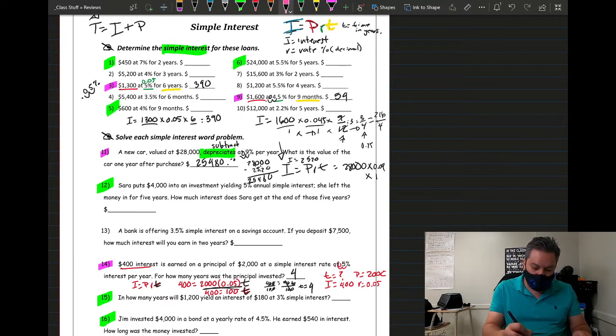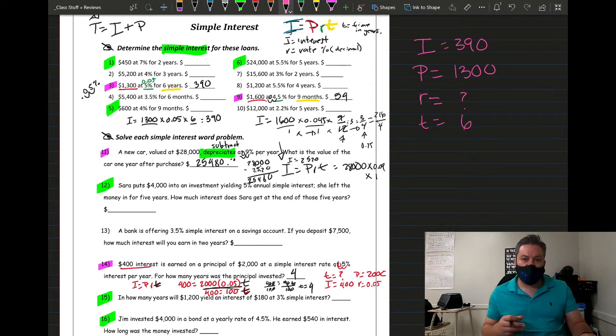For instance, if I'm given, for example, I have an interest of $390 dollars, my principle is $1,300 dollars. I need to know, what's the rate? The rate I don't know. After six years, so basically if I need to find the rate for six years of $1,300 that gives me $390 of interest rate.